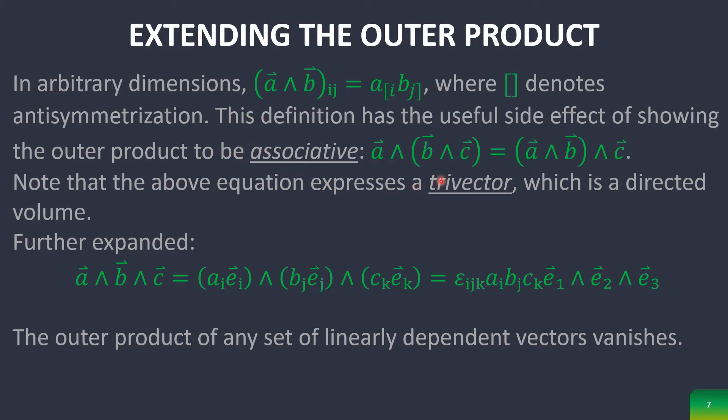Anyway, this shows that it's associative and makes it very easy to show what a trivector is, which is, by the way, a directed volume, just in the same way you have a bivector, which is an oriented plane.